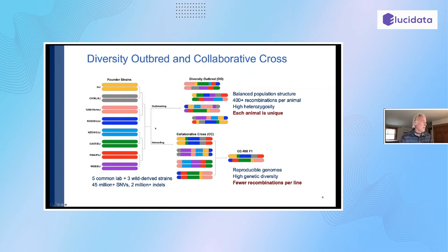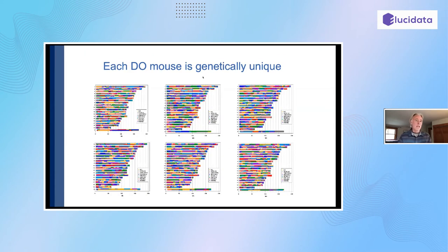Starting from the eight founder strains, we went in two different directions. After mixing the strains, we re-inbred them to make new homozygous reproducible mouse models called the Collaborative Cross. We also maintain an outbred colony which gives us a steady flow of unique individuals. These Diversity Outbred mice are highly genetically diverse and highly recombinant. Every DO mouse is a genetically unique individual — a mosaic of the original eight parents — and because we have complete genome sequences of the eight parents and high-density genotyping tools, we can reconstruct these mosaics and effectively impute the whole genomes of every individual mouse.